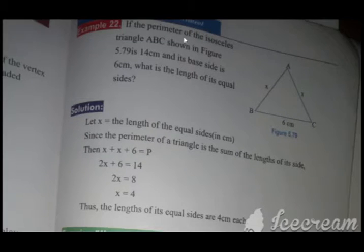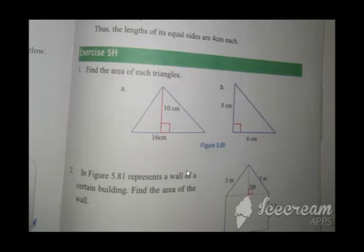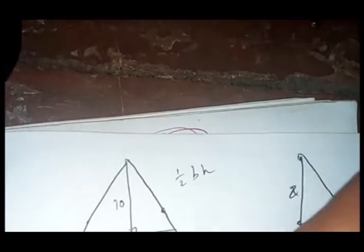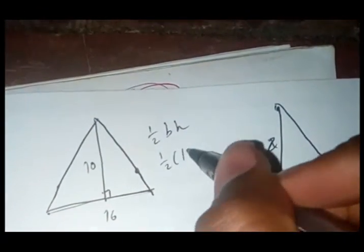The perimeter of the triangle is A plus B plus C. If one side is X centimeters, another side is X centimeters, you must add them. So X plus X plus the other side equals the perimeter.